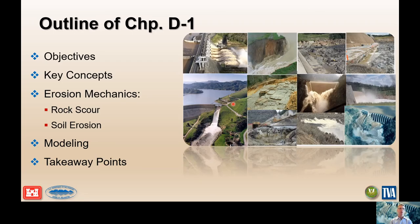The general outline for the chapter: we're going to cover the overall objectives of D1, talk about key concepts and take-home points, then go into the basics of erosion mechanics for soil and rock. We'll get a big overview picture of those processes, what the data looks like, and what thoughts you need to have when solving problems with failure modes related to rock or soil scour. We'll briefly talk about modeling and model concepts and how they're applied to the risk assessment, then summarize with takeaway points.